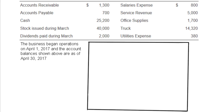Just like the income statement, this statement is going to be for a time period. You can't just drive by a business right now and take a snapshot of how much of that business's earnings the owners are deciding to take out of the business. You're going to have to specify what time period of net income and money being taken out that you're talking about.